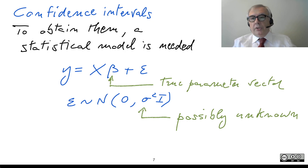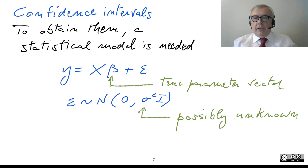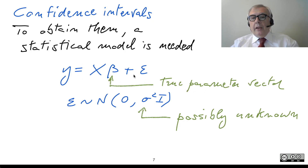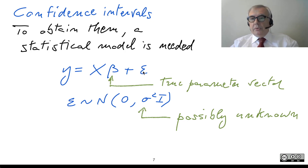We cannot talk about confidence intervals without introducing a statistical model for our data. We now make the assumption that the vector Y equals the regressor matrix X times beta, where beta is regarded as the true parameter vector. We are assuming the data are generated by this model, where epsilon is a random vector, and therefore we need to make assumptions on the nature of this random vector.